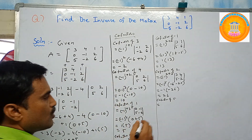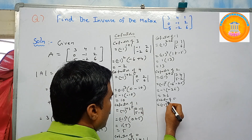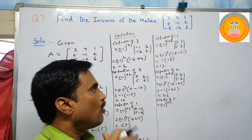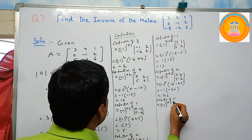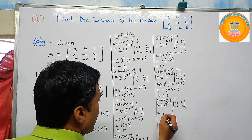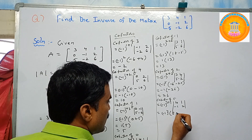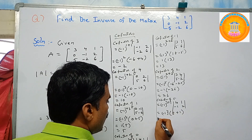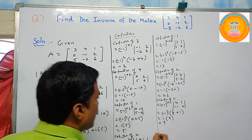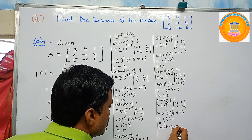Cofactor of five: five is in the third row and first column, so i equals three, j equals one. Minus one to the power three plus one equals four. The minor is the determinant of four, one, minus one, two, which equals four times two minus minus one times one equals eight plus one equals nine. Since power four is even, plus one times nine gives cofactor of five equals nine.